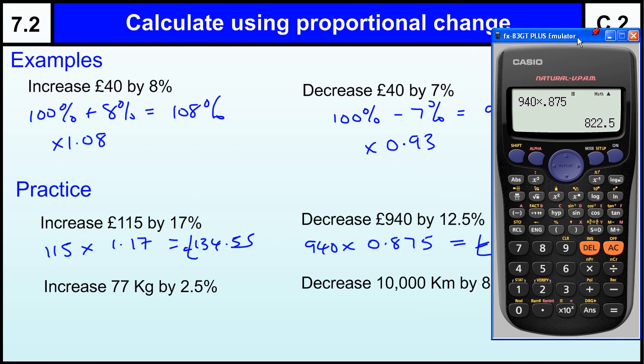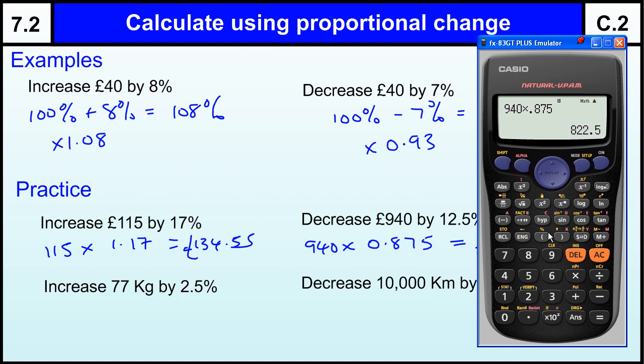Okay, let's have a look at a couple without £ signs in front of them. This one's in kilograms. Increased by 2.5%, so I'm doing 77 times by 100 and 2.5, or 1.025 is the thing we multiply by. So 77 times by 1.025 equals 78.925 kilograms.